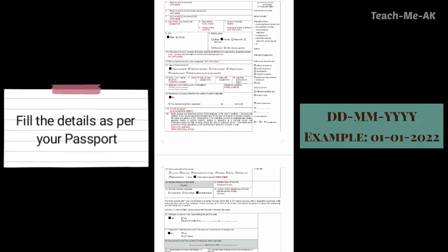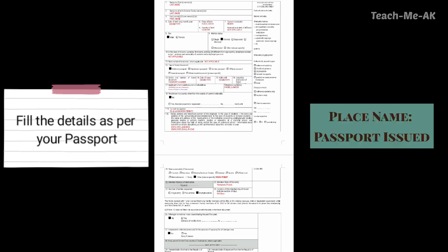In the fifteenth question, what is the validity of your passport — please mention it in the format DD-MM-YYYY. Going to the sixteenth question — please mention the place where your passport has been issued. The place name where your passport has been issued has to be written in the sixteenth question.